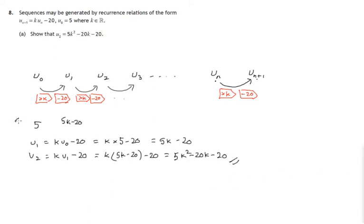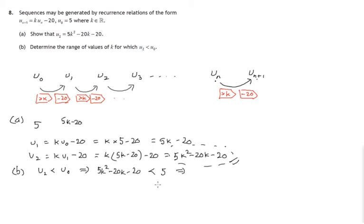Let's move on to part B. It says determine the range of values of k for which u_2 is less than u_0. It means that u_2, 5k squared minus 20k minus 20, is less than u_0, which we know is 5. So we have a quadratic inequality. Let's take 5 from both sides. 5k squared minus 20k minus 25 is less than 0.